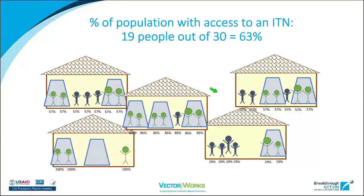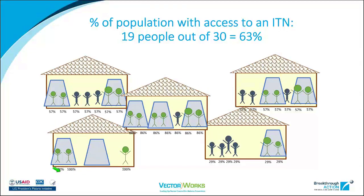The third indicator — the percentage of households owning at least one ITN for every two people — is our household universal coverage indicator. It shows how many households have enough nets for all their members. In our example, only one of the five houses meets this threshold, and it's no coincidence that it's a small household. Smaller households are much more likely to achieve one ITN for every two people. Larger houses often miss out by just one or two people. So this indicator is really a measure of perfect coverage, and it's very difficult to achieve.